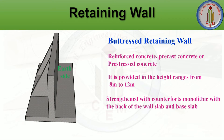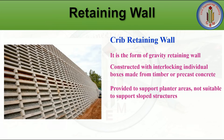The buttressed retaining wall is similar to the counter foot retaining wall, with the only difference being the position of the earth side. In a counter foot wall the earth is on one side, while in a buttressed retaining wall it is on the opposite side. When more economical construction is desired, the buttressed retaining wall can be chosen.